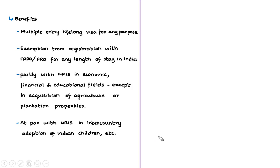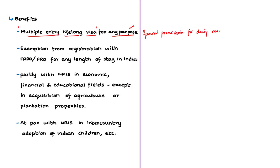OCI cardholders can visit India without a visa for lifelong — that is, they have multiple-entry lifelong visas for visiting India for any purpose. However, OCI cardholders require special permission to undertake research work in the country. They are also exempt from registration with the Foreigners Regional Registration Officer (FRRO) for any length of stay, whereas PIOs need to register with local police authorities if their stay exceeds 180 days.